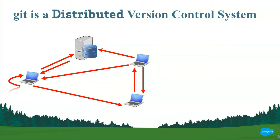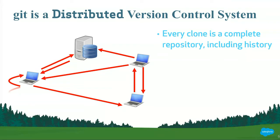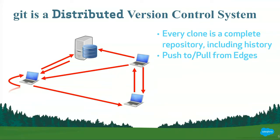Git is a distributed version control system — I'm using the terms version control system and source code management system interchangeably. For Git, it's distributed, meaning every clone is a complete repository that includes all of the history and all the code from the other clones. Typically, you might identify one of those clones to be the master or the server, shown by the big box, whereas the laptops are the edges. You can push and pull from any of the nodes, including between the edges. You generally would work offline and sync when you're back online.